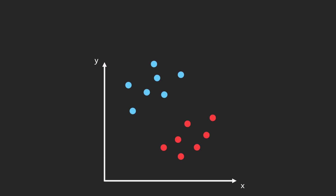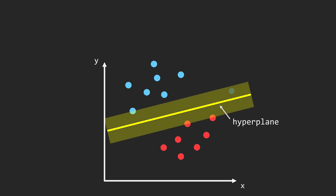Imagine a simple dataset with two classes – blue and red. To classify new data based on the samples we already have, we need a boundary that separates these classes. In simple cases, this boundary is a line called a hyperplane in higher dimensions. We can also define a region parallel to that hyperplane that represents the space between the nearest points from each class. This is called the margin.